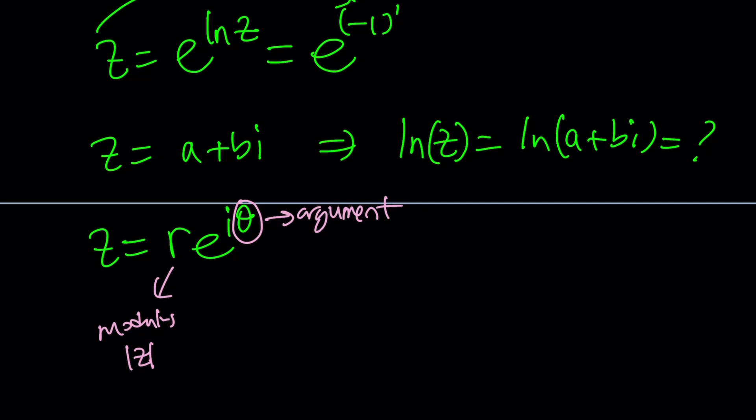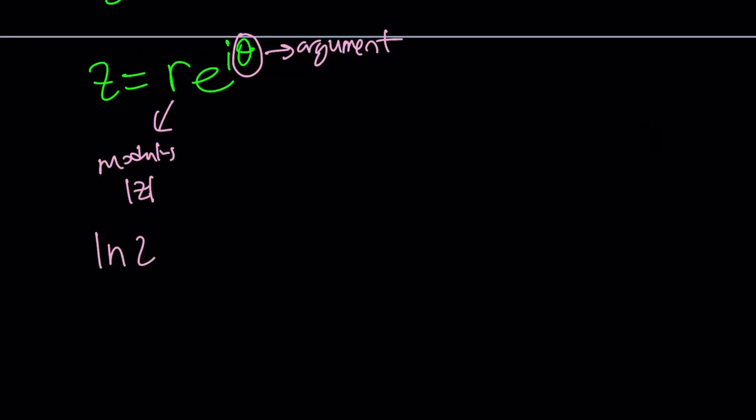So do we know what z is, though? We don't. But let's just quickly define what ln z from here is going to be. It's going to be ln r, the natural log of the modulus, plus i times theta. So that will be the natural log of z.